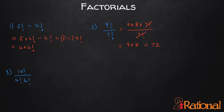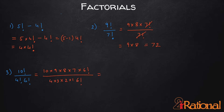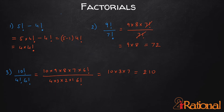For the third one, I can write 10 × 9 × 8 × 7 × 6! and cancel out 6! from the denominator, then expand 4! and cancel out the specific terms to get 210. In this manner, you can use lower factorial values that you can cancel out or take as common for solving these kinds of sums.